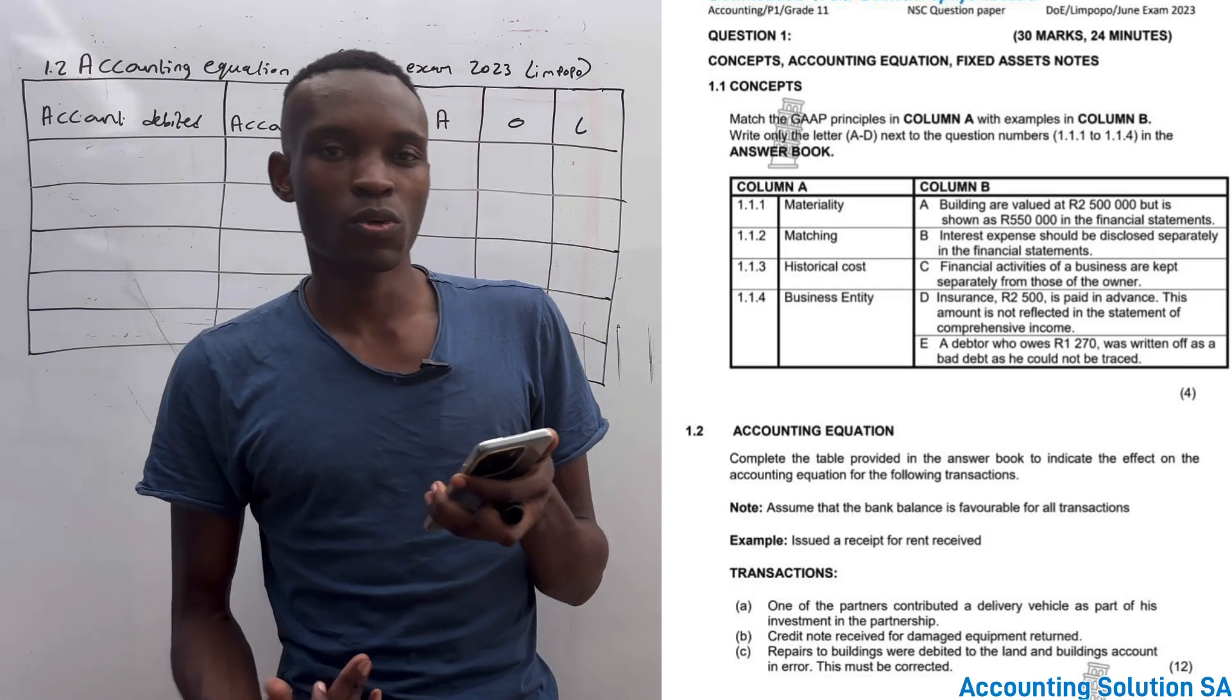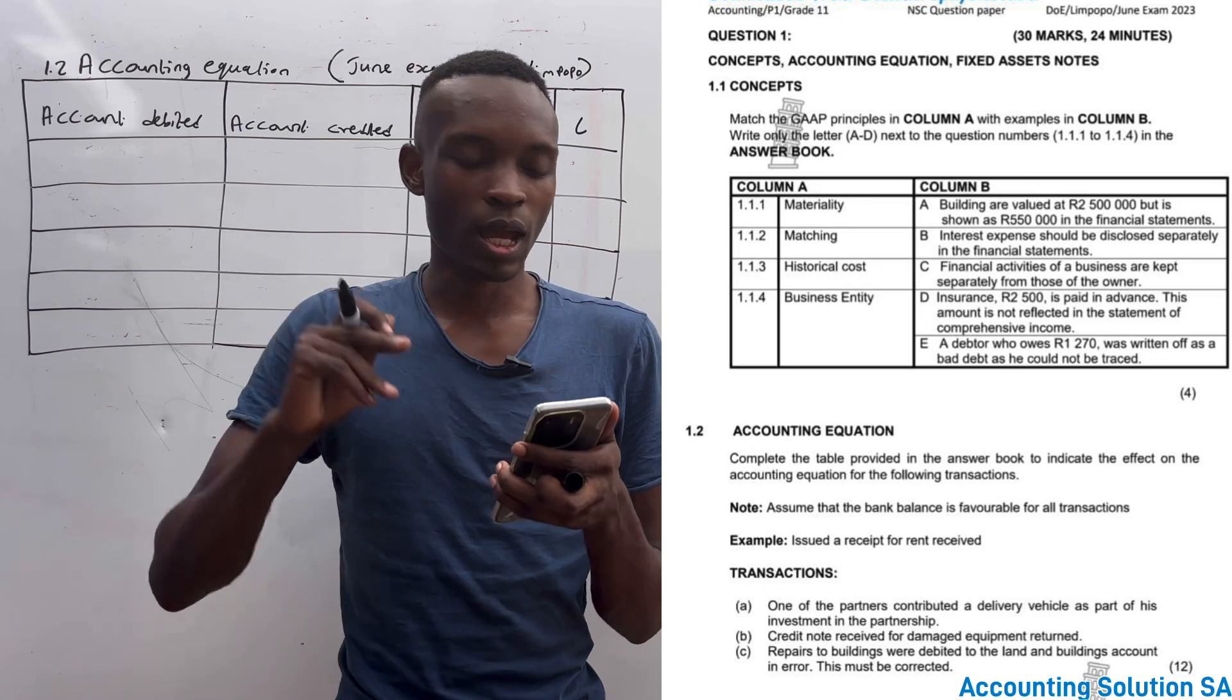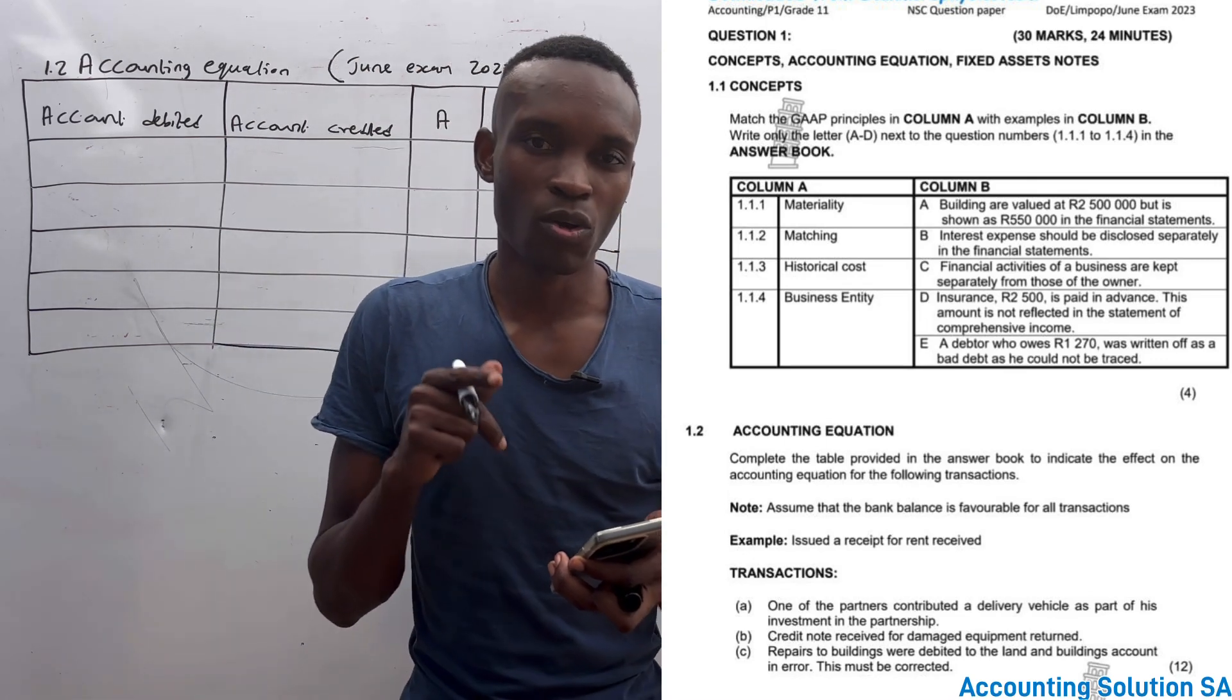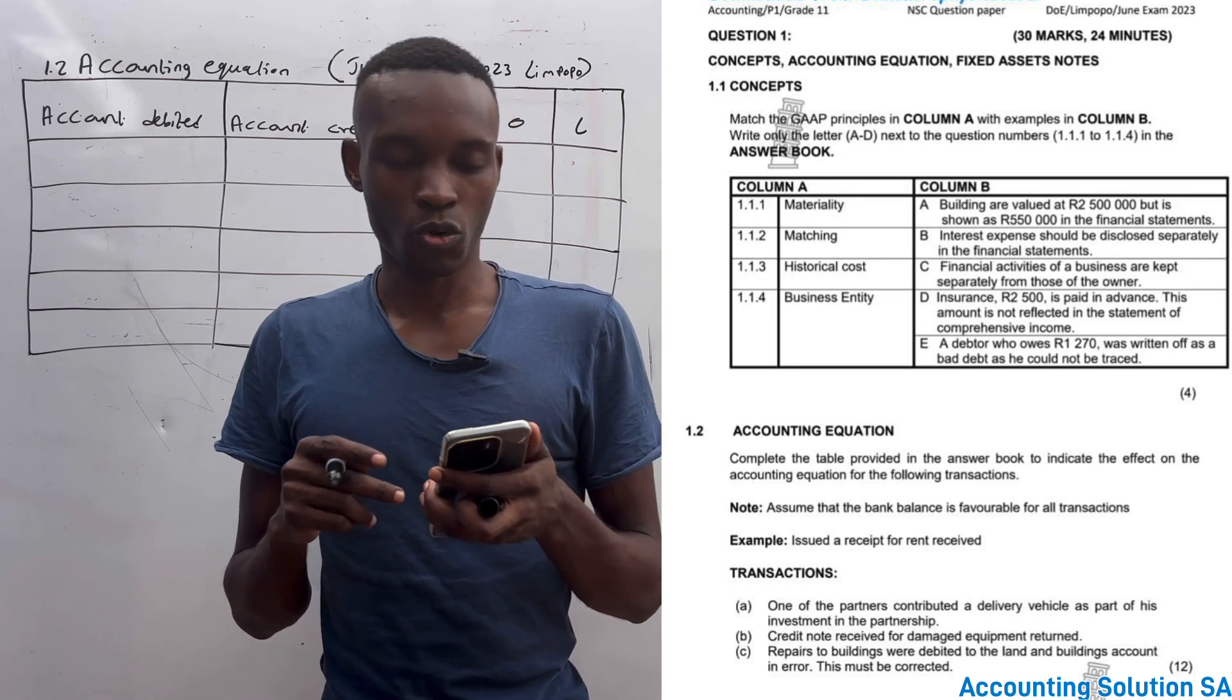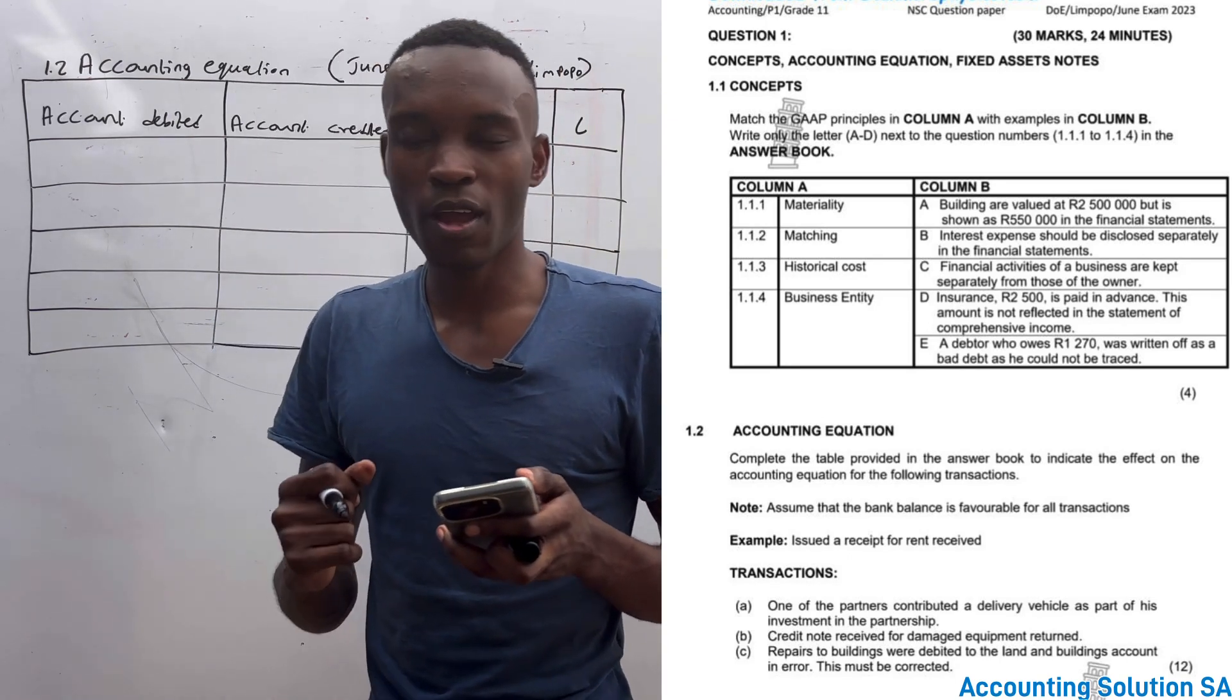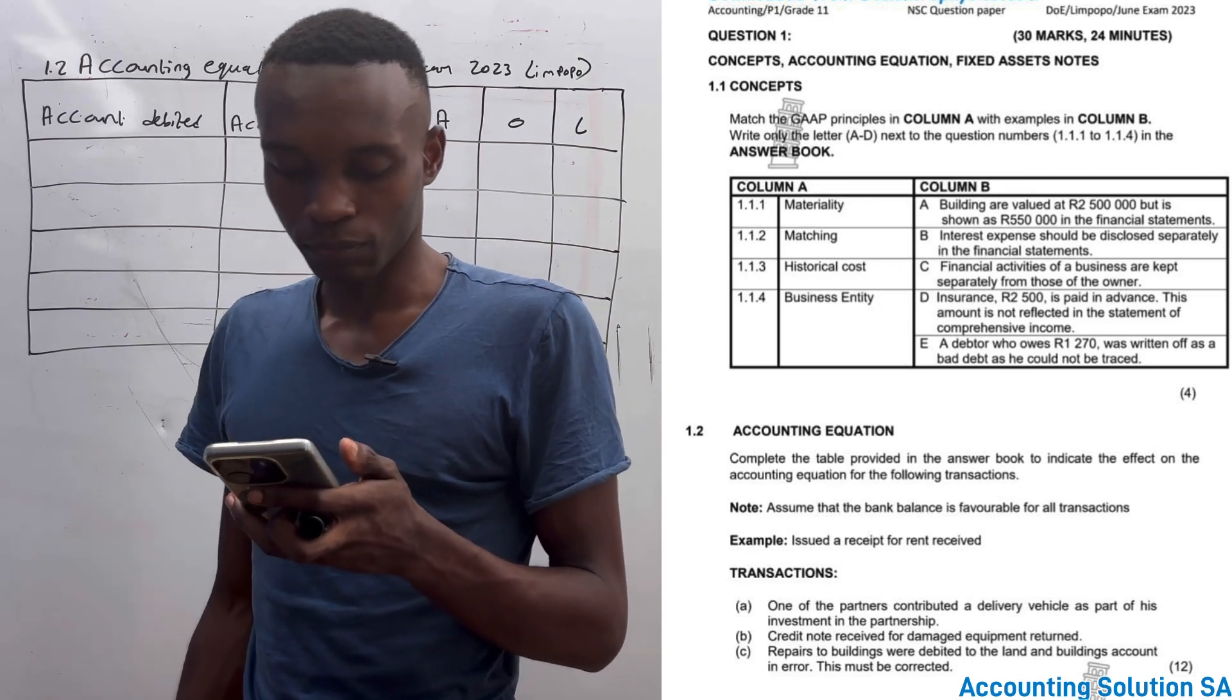The first one was column A and column B. Please, I'm not going to do question 1.1 here, but make sure that you comment with the answers so that I can come to your comment section and let you know if it's true or not. It was a GAP principle.